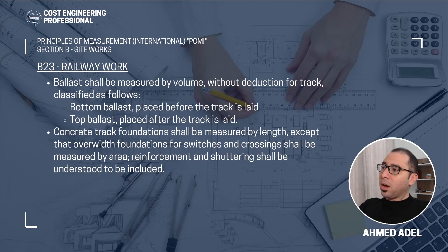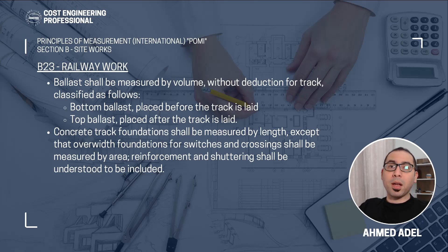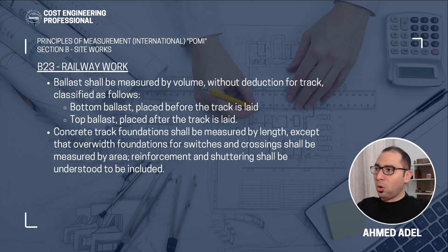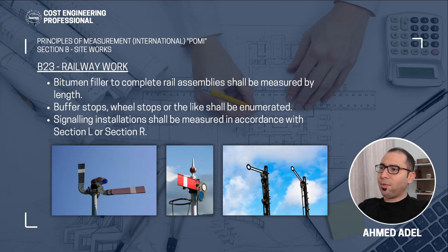Concrete track foundations shall be measured by length, except that overall width foundations for switches and crossings shall be measured by area. Reinforcement and shuttering shall be understood to be included. So while normally concrete, reinforcement, and formwork are measured separately, for concrete track foundations the steel reinforcement, shuttering, and concrete shall all be included in the same item measured by length or by area.